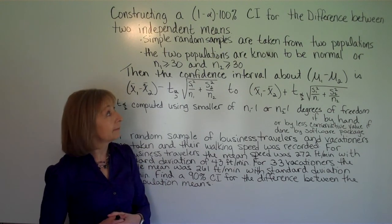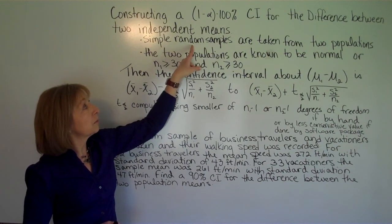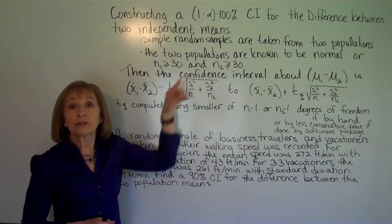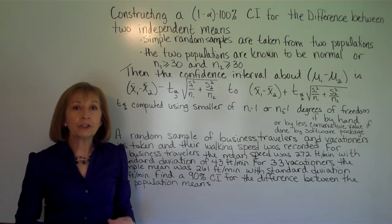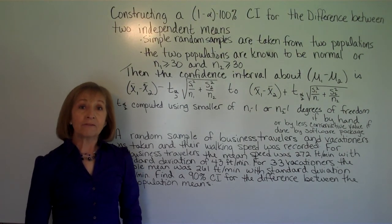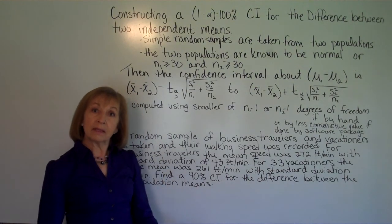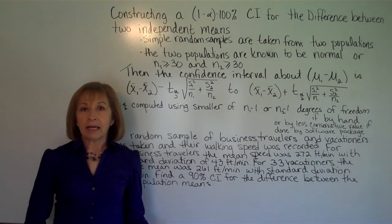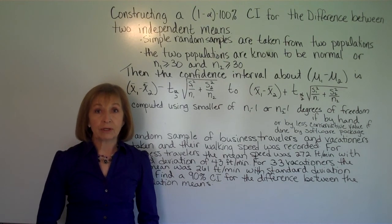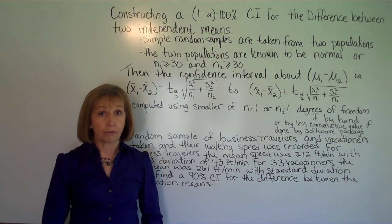We need to make sure the samples are simple random samples taken from the two populations, and that the two populations are either known to be normal or you're taking a sufficiently large sample size. Using the central limit theorem, sufficiently large means n₁ ≥ 30 and n₂ ≥ 30 if you don't know that the individual population distributions are normal.